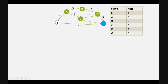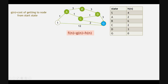The important formula to remember is f(n) = g(n) + h(n). We will use this formula to solve the entire problem. g(n) is the cost of getting to a node from the start state. For example, g(b) is the cost of getting to node b from the start state, which is 1 + 3 = 4. h(n) is the heuristic function, which is given in the question itself.